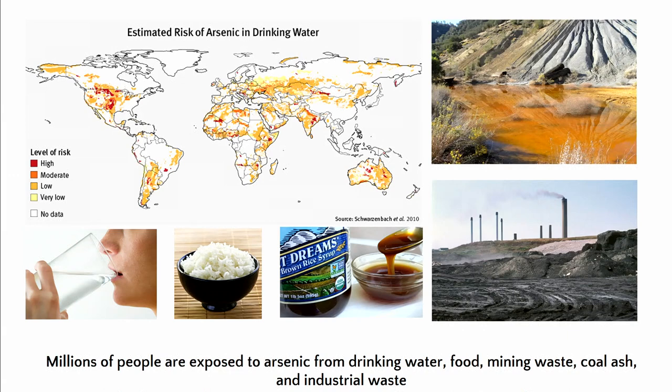If crops are grown with contaminated groundwater, they too can become contaminated. Work done at the Dartmouth Center shows that arsenic accumulates in rice — a staple diet for millions of people in the world that contains low levels of arsenic. And it's not just the rice, but also rice products. For instance, brown rice syrup, which is in just about all manufactured food. So arsenic has really become a ubiquitous pollutant in our diets and in our drinking water.